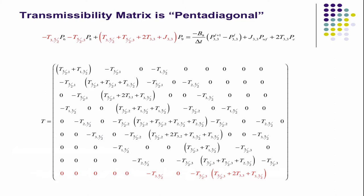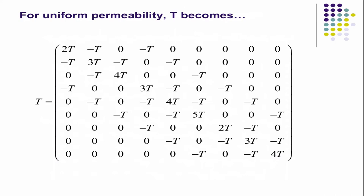So there's your total T matrix. If all the permeabilities were uniform, then it just becomes that, your pentadiagonal matrix. And the other one was pentadiagonal too. It was harder to see because you had all the terms. But now it's just your standard pentadiagonal matrix.